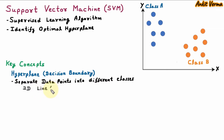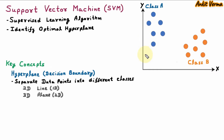A line is one dimension. For three-dimensional space, hyperplane will be a plane, which is two-dimensional. Here in the diagram, we are having x and y-axes, so we are dealing with two-dimensional space. So here, hyperplane will be a line.